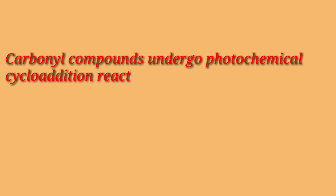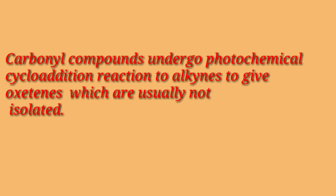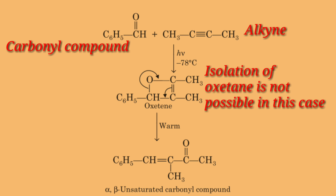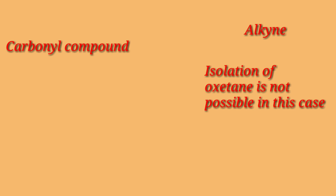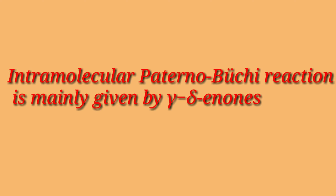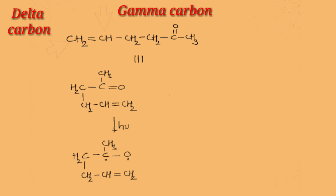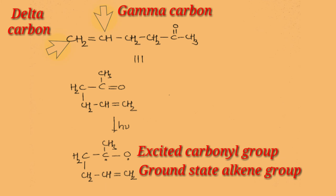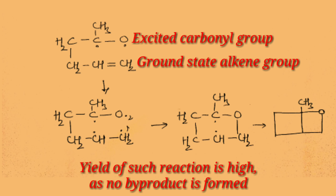Carbonyl compounds also undergo photochemical cycloaddition reaction with alkynes to give oxetanes, which are usually not isolated but isomerize to alpha-beta-unsaturated carbonyl compounds in a subsequent thermal reaction. Intramolecular Paternò-Büchi reaction is mainly given by γ,δ-enones, which undergo rapid interaction between the excited carbonyl group and the ground state carbon-carbon double bond. The yields are high with usually no by-product formation, making this reaction a highly efficient and versatile method for the synthesis of compounds that are difficult or impossible to prepare by other methods.